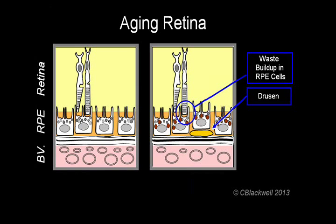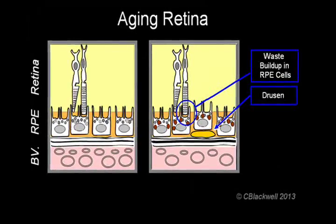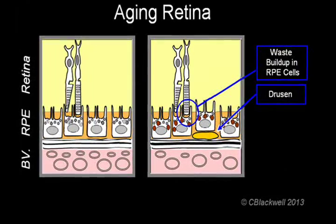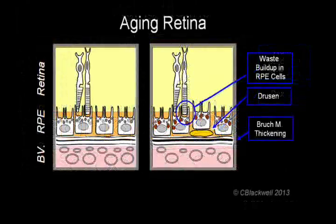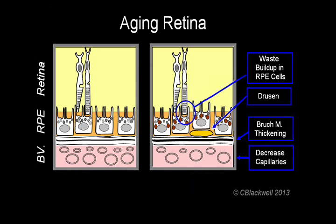Early on, the clumps are small, only visible through a microscope. As the clumps grow in size, they become visible on a regular exam, and they can vary in type and size. To be complete, we need to add that the layer between the blood vessels and the retina, Bruch's membrane, becomes thicker with time, and that may impede oxygen flow. The number of capillaries in the vascular layer also decreases with time. All these changes put stress on the retinal pigment cells and the photoreceptors.